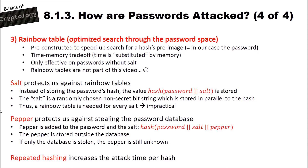Pepper protects us against theft of the password database. The pepper is also added to the password and salt, so we store the hash of (password + salt + pepper). The pepper is stored outside the database and is also a randomly chosen bit string. If only the database is stolen, the pepper remains unknown, so the attacker cannot compute anything useful.